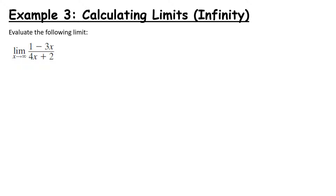Now let's look at our third type — where we have infinity. Infinity is not a number, it's a concept. When I talk about infinity, it is the biggest possible number I can think of, and then I can add 1 to make it bigger, multiply it by 2 to make it bigger. So infinity is constantly growing — it isn't a specific number, it is more of a concept.